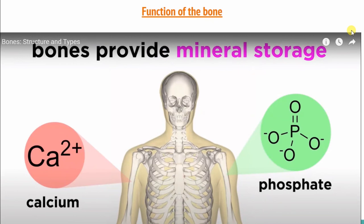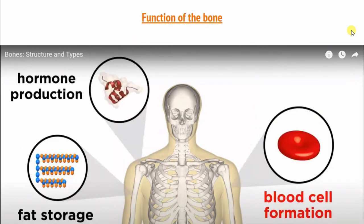The bone stores our calcium and phosphate, which is controlled by the bone. When the body needs ions, the bone can discharge them, giving balance to the body — a balance of calcium and phosphate. If there is excess calcium and phosphate, the bone absorbs it, and when the body needs them, it can release them. Then, the bone is involved in hormone production, fat storage, and blood cell formation.